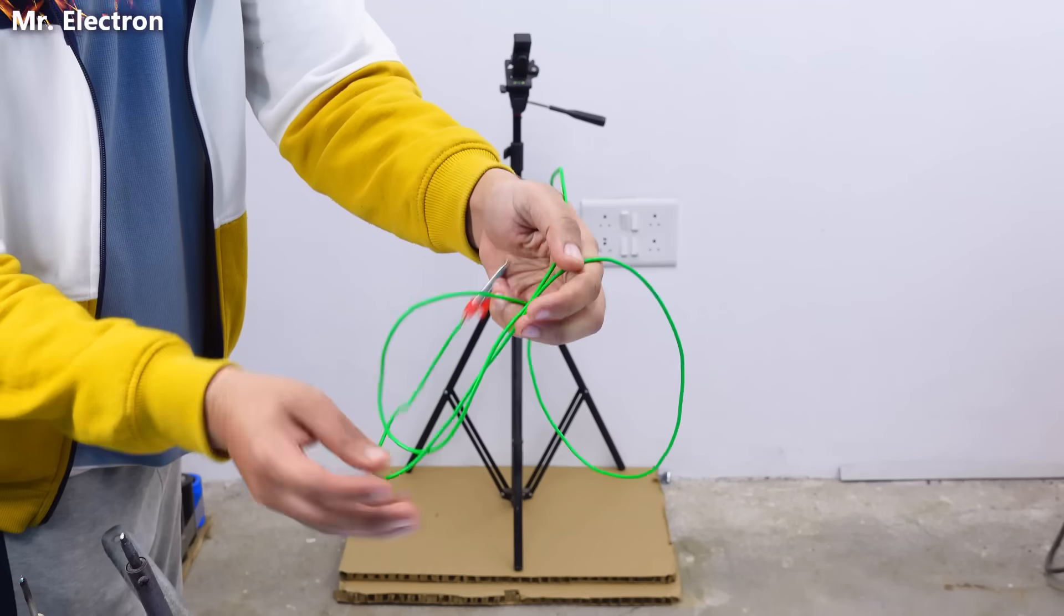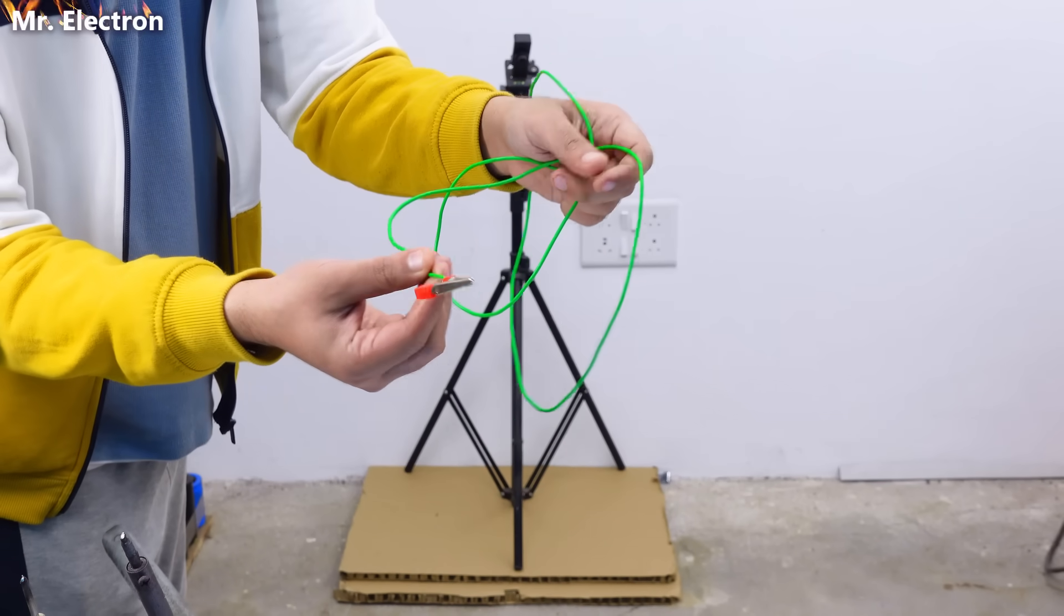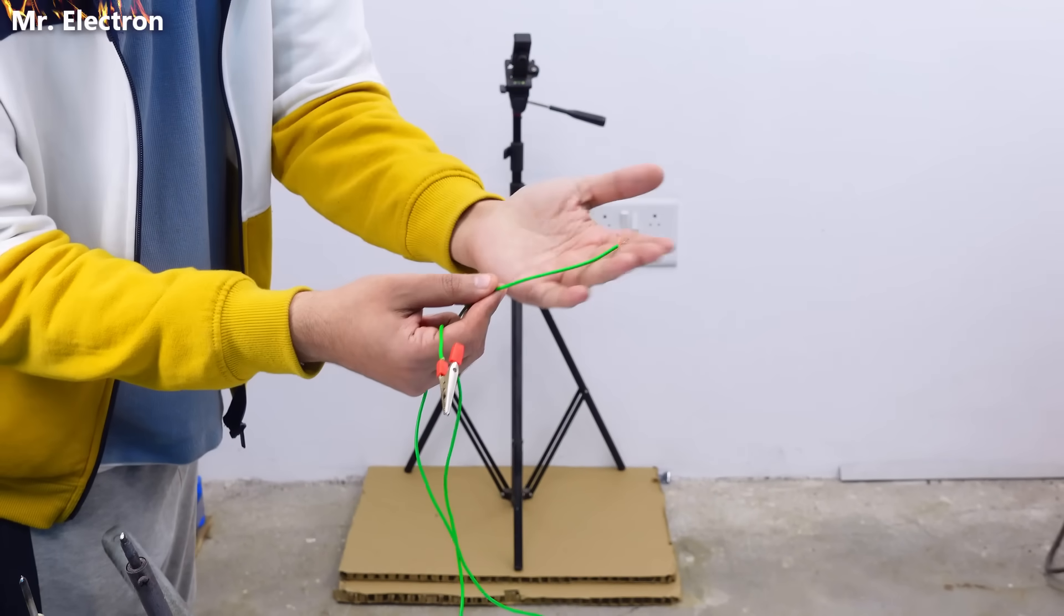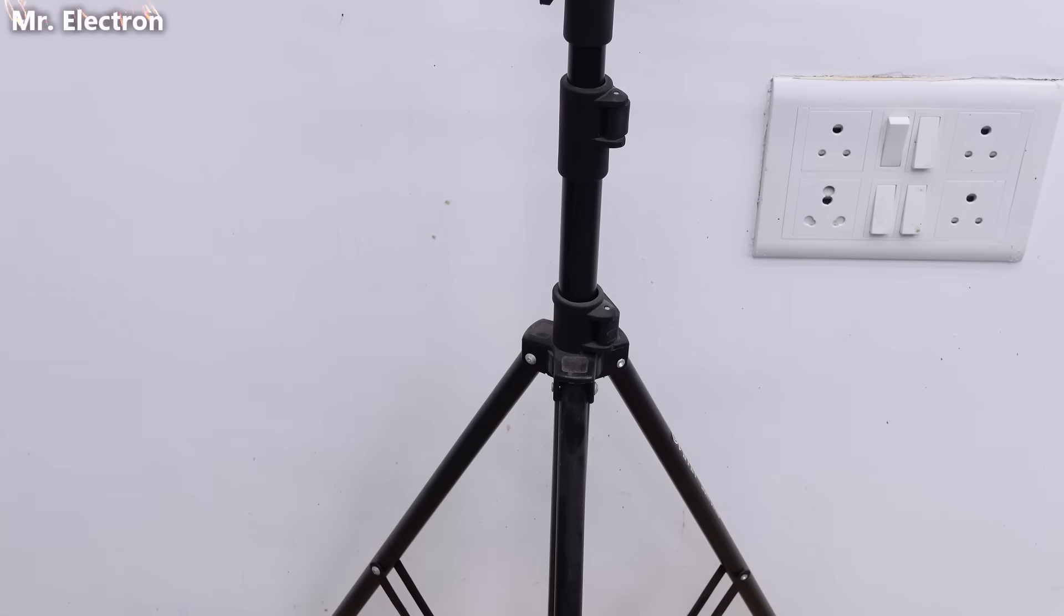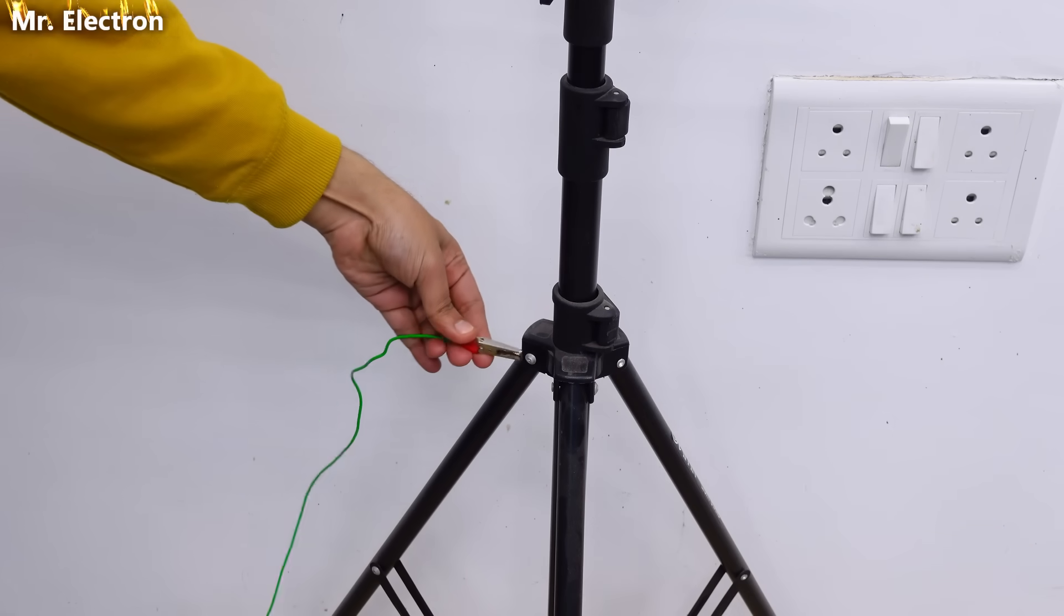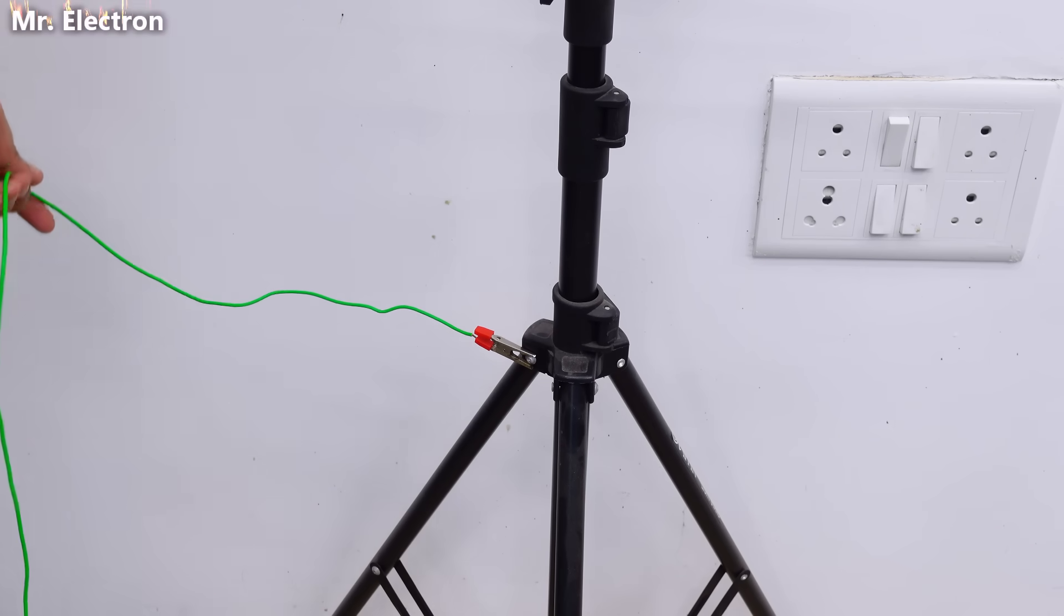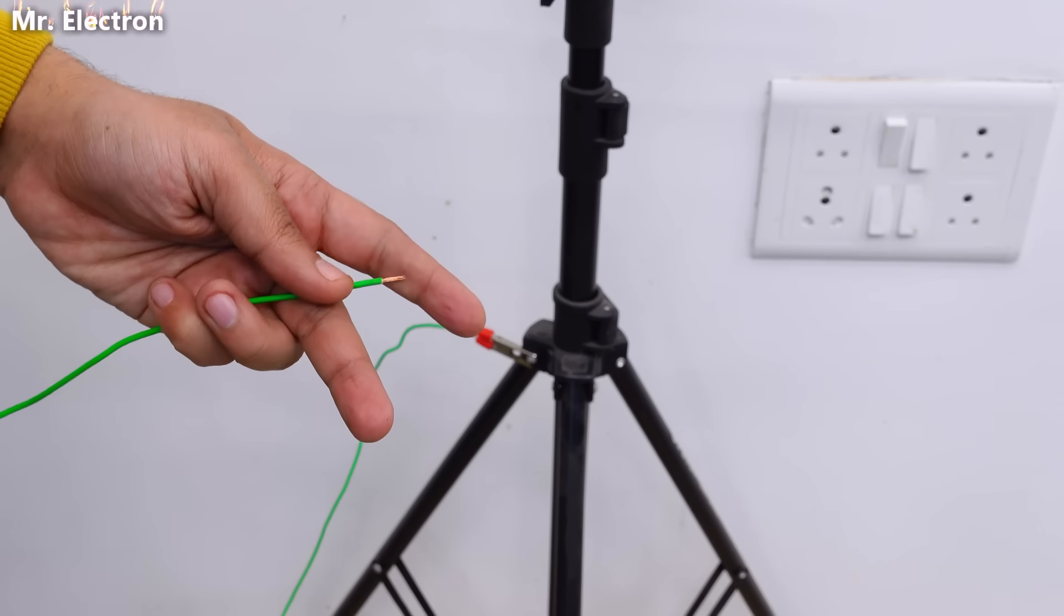And here you can see this wire. On one end I have this clip and the other end is bare. Nothing. So this clip end will be connected to the tripod as an antenna. And the bare end will be connected to the circuit.